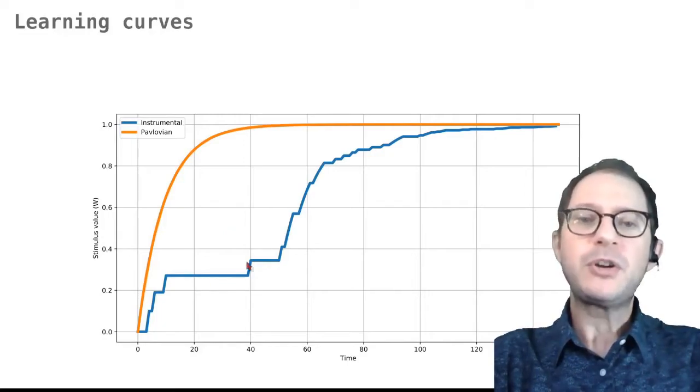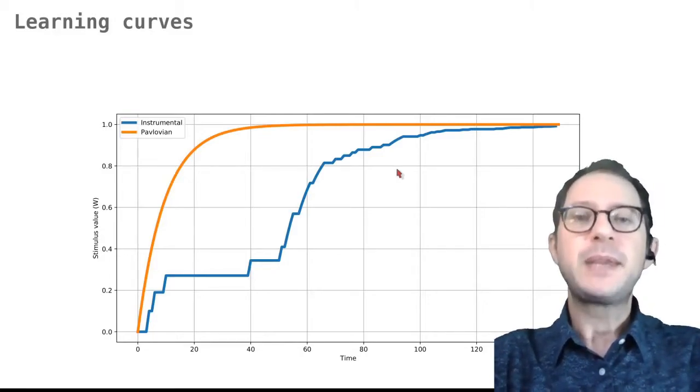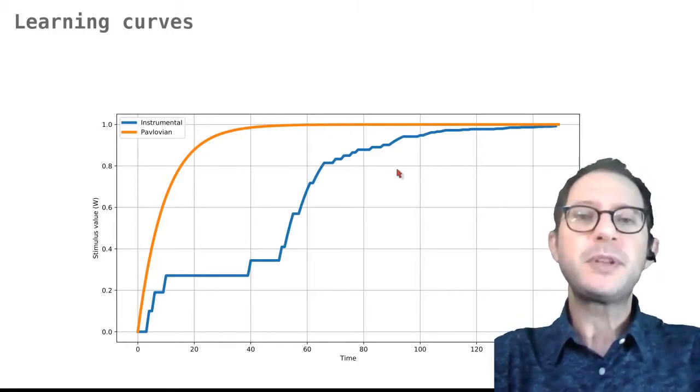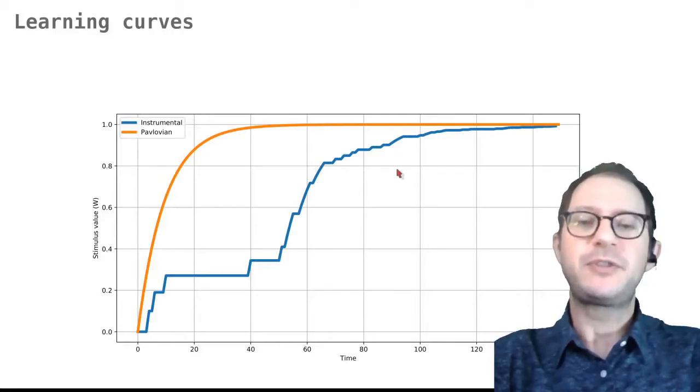The blue curve comes from a similar experiment, but now we are talking about instrumental conditioning. So you can imagine that the stimulus is a lever that the animal, like a rat, can press to get food. The lever also becomes a valuable stimulus during learning as it predicts the opportunity to get food. The increase in the value of the lever is more irregular, however, compared to the orange curve that represents the increase in CS value in a Pavlovian conditioning experiment.